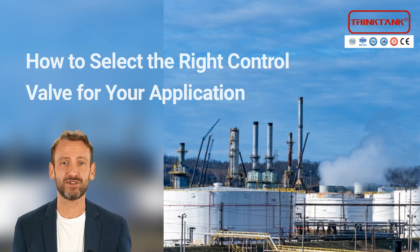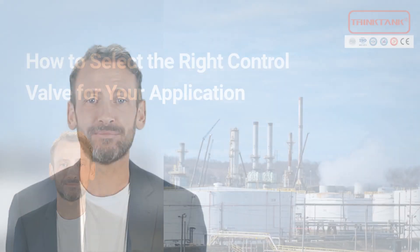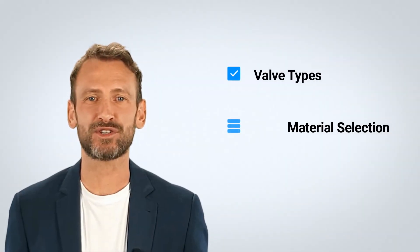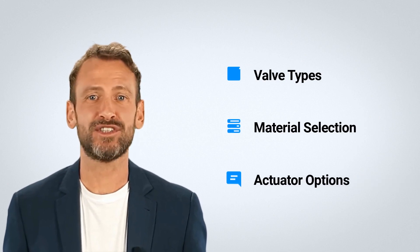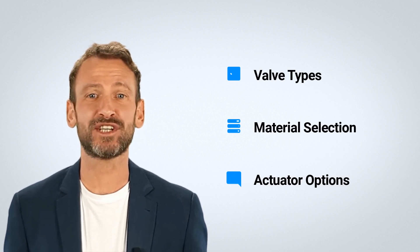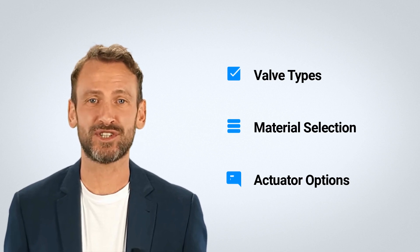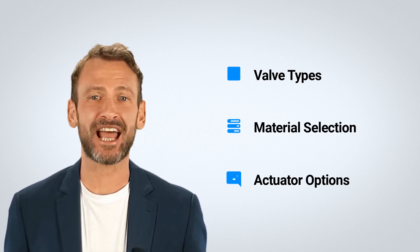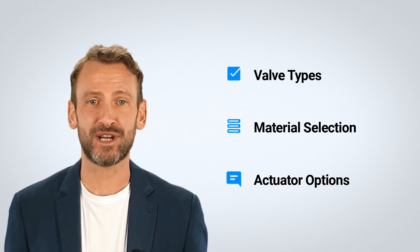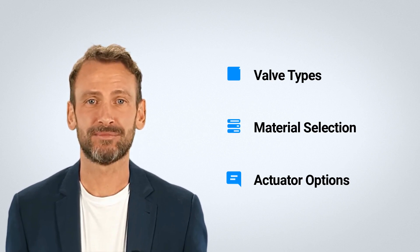Hi Jack, welcome to the control valve course. Today we're discussing how to select the right control valve for your application. We'll help you choose the best optimal solution for your project. Selecting the right control valve is crucial for optimal performance and efficiency. A poorly chosen valve can lead to reduced throughput, increased energy consumption, and even equipment damage. By considering factors such as process conditions, valve type, material selection, and actuator types, you can ensure that your valve is the right fit for your application and maximize its performance and lifespan.